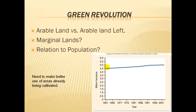Marginal lands are the only ones left really getting put into agricultural production. As you saw in the Home video, much of the land going into agricultural production these days is former tropical or equatorial forest — places like the Amazon Rain Basin and the Belgian Congo of Africa. This graph relates to population in that land growth is linear, but population growth is exponential. So if we're not putting more land in production, how have we kept up with feeding a burgeoning world population? The population explosion of the 1960s was actually a product of being able to grow more food on the same amount of land.